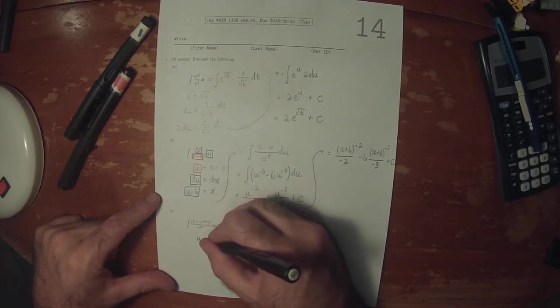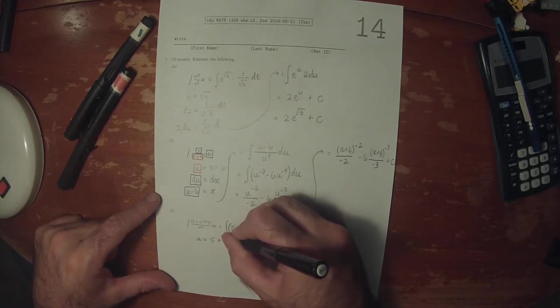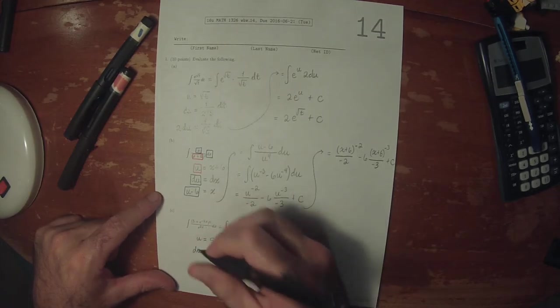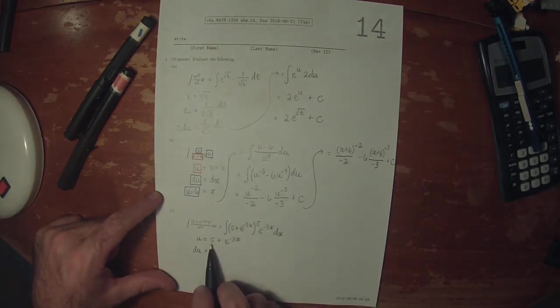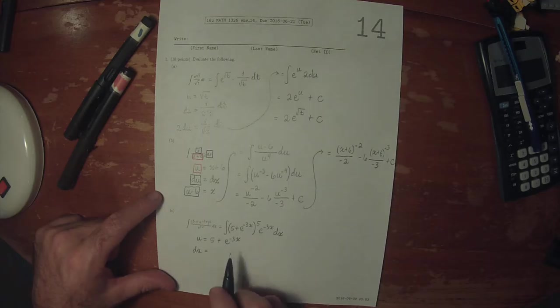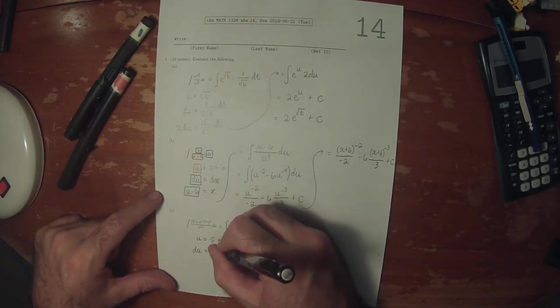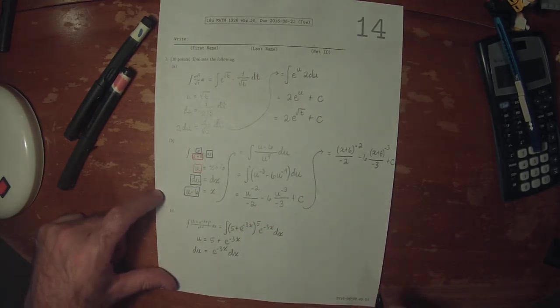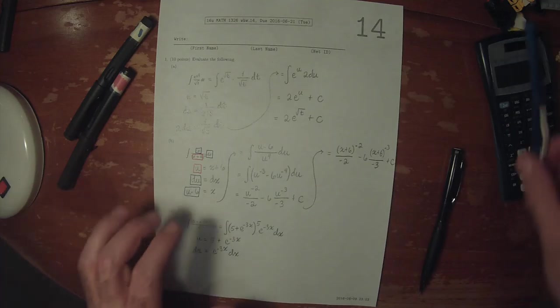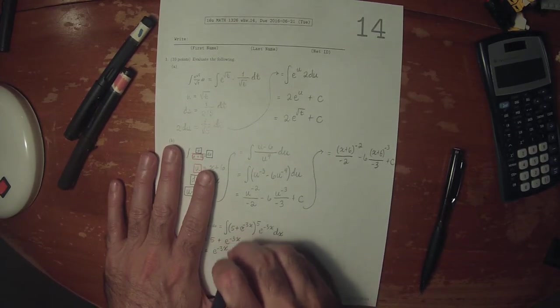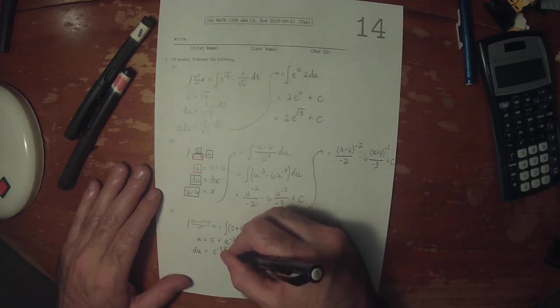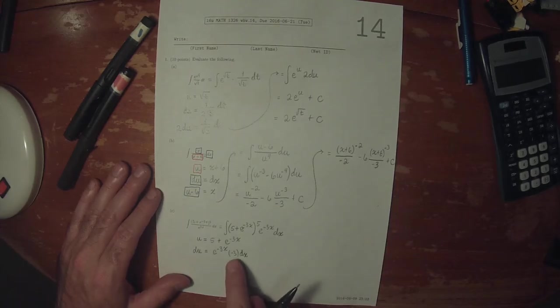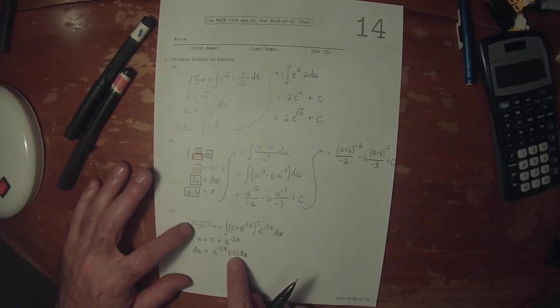So u is 5 plus e to negative 3x. du, the derivative of 5 is 0, the derivative of e to negative 3x is e to negative 3x dx. Forgot the negative 3. Negative 3 dx. So we're missing this negative 3 in the antiderivative.